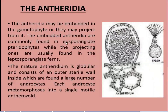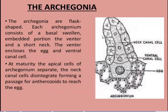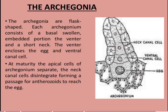Antheridia are embedded in the gametophyte in pteridophytes. Mature antheridia have a globe shape, a sterile wall, and large androcytes that undergo metamorphosis into single motile anthrozoids. Archegonia are flask-shaped, and mature archegonia have apical cells where neck canal cells disintegrate, forming a passage for sperm to reach the egg.